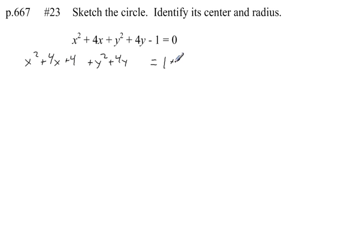To keep things balanced, we add 4 to the right-hand side as well. Likewise, we can complete the square for our y's by taking half of this value, which is 2, and squaring it. So we'll put plus 4 here, and on the right-hand side to keep things balanced.